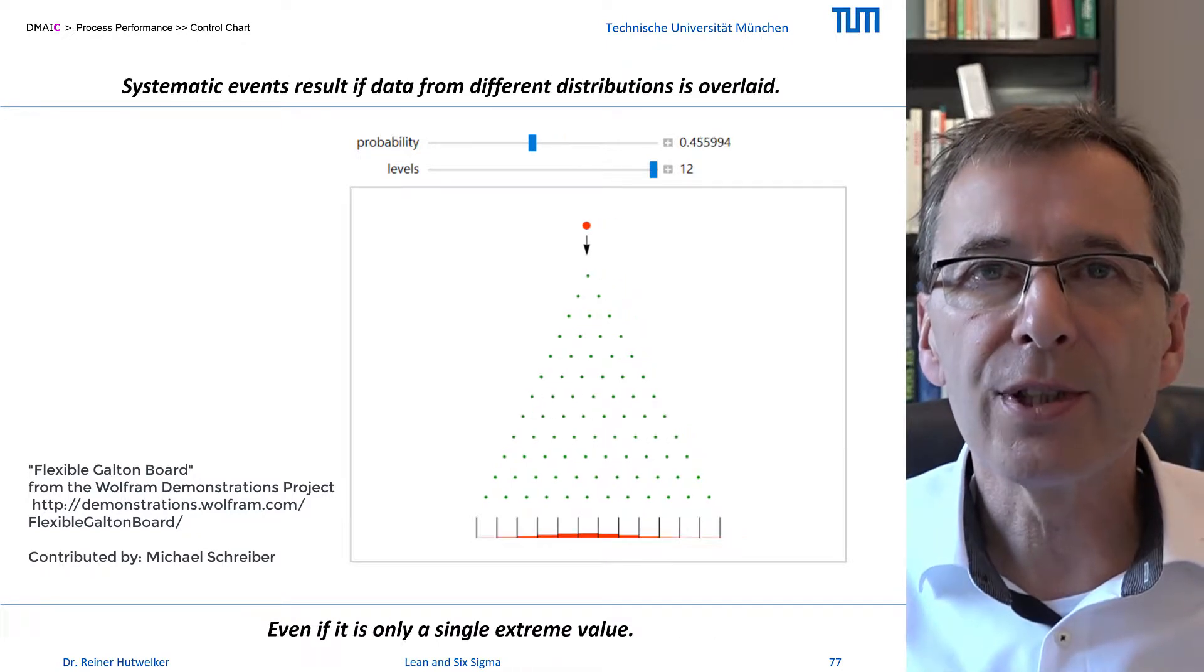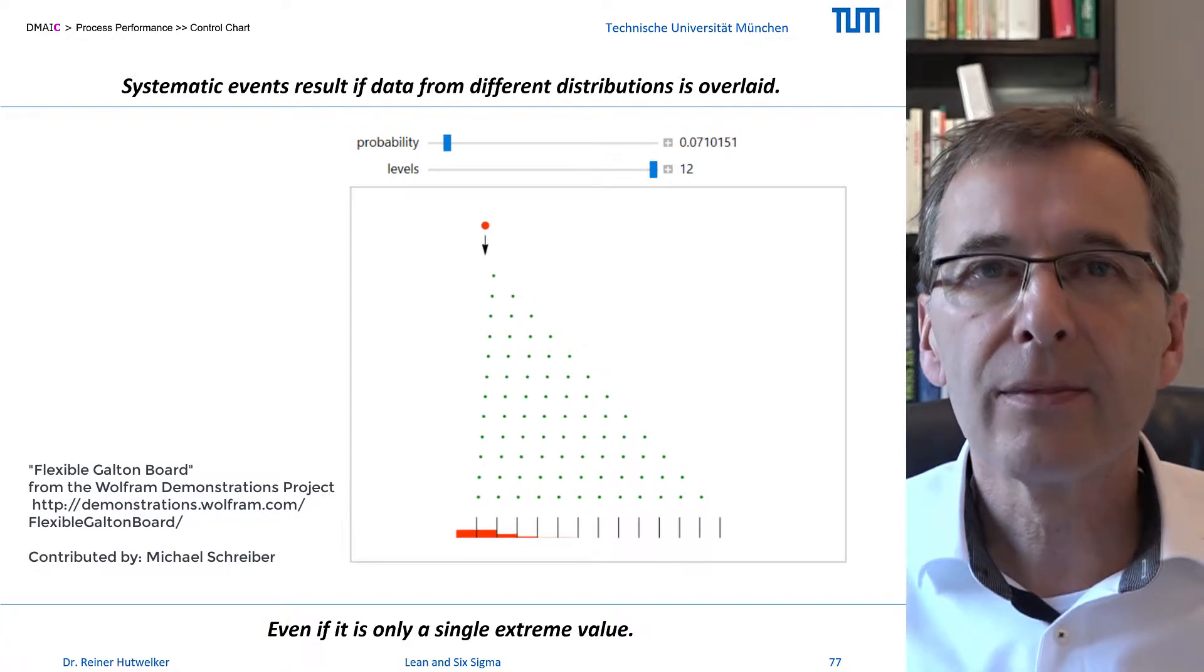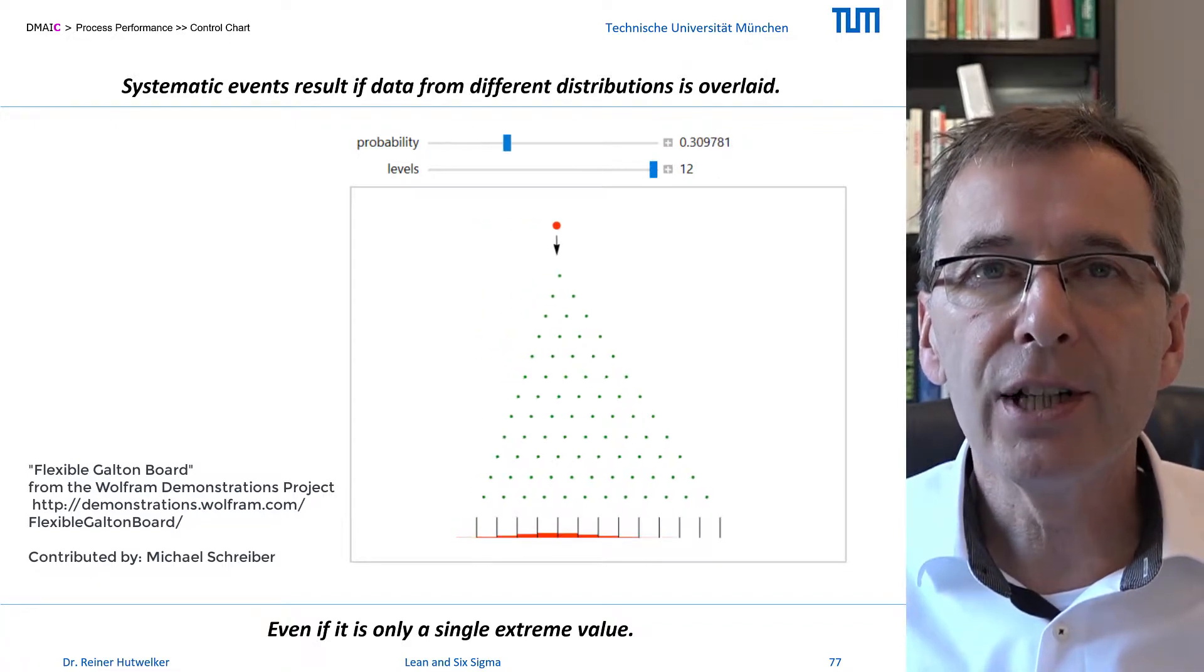Specific influences on the process, on the other hand, lead to signals in the output data. They are reflected in extreme single values or patterns of adjacent values.